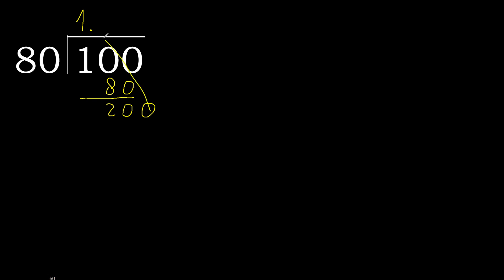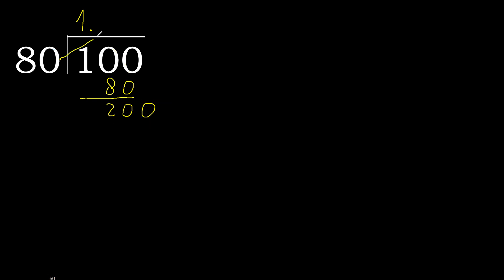Point. 0 point. Now we have 200. 80 multiplied by 3 is greater, so multiply by 2. Subtract.